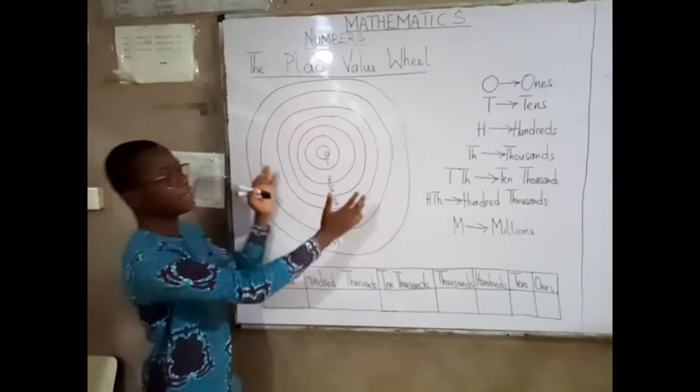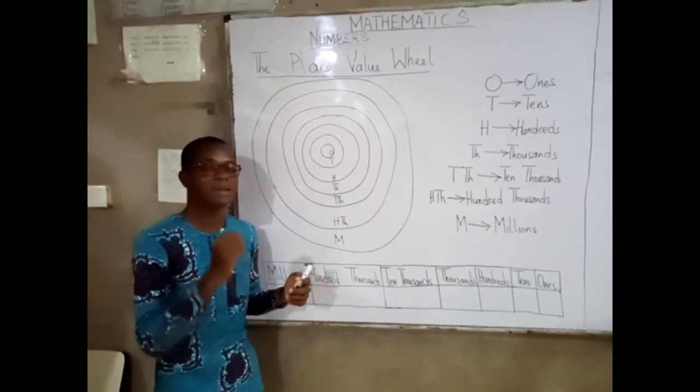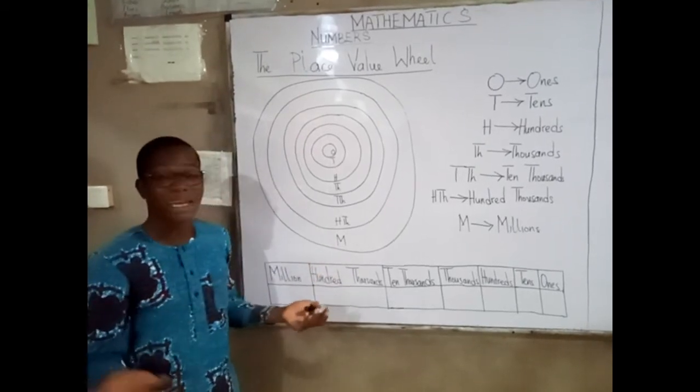This is a game, as you see here. It's called the place value wheel or some also call it the number wheel.